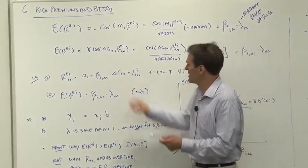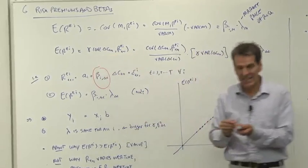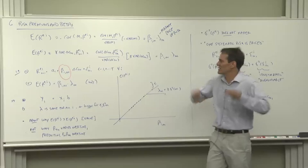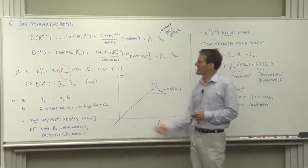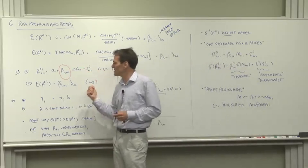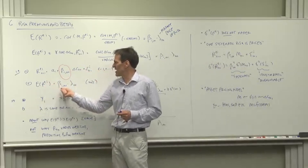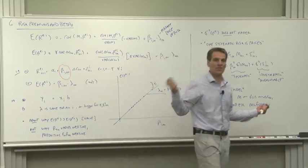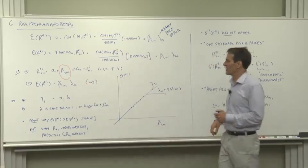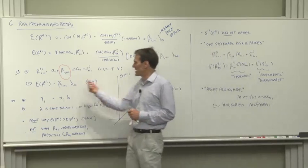The point of that regression is to find the beta coefficient, the tendency of this asset to fall in times when consumption falls. Then that's an input to the model. The model says expected returns should be high where betas are high. And the lambda, the market price of risk, is the slope coefficient relating expected returns to betas.